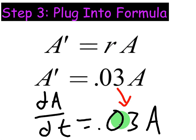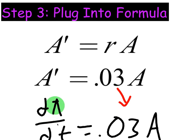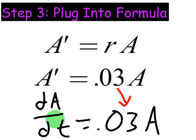Let's plug in the $1,000 that we are initially given. That means when you initially put that money into the account, the rate at which the money in the account is increasing is equal to 0.03 times 1,000, which equals $30. So the rate at which the amount in the account is increasing initially is equal to $30.